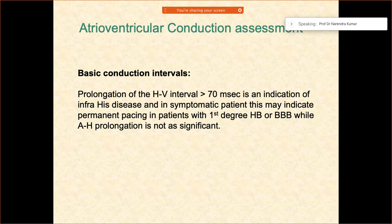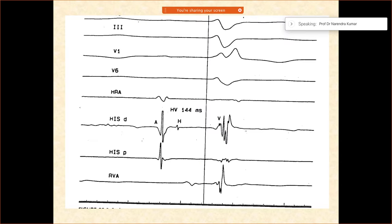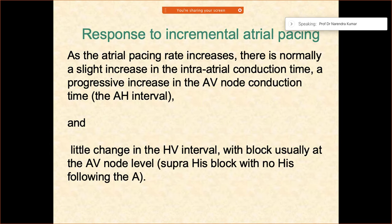If the HV interval is more than 70 milliseconds and the person is symptomatic, that is the time you should be considering pacing for such patients. Looking at the tracing here, you can measure the AH interval, and when you look at the HV interval it is 144 milliseconds — so this is an indication for pacing. More than 100 milliseconds is always a pacing indication. However, if it is more than 70 to 80 milliseconds but less than 100 milliseconds, and someone is having a degenerative muscular disease, for those patients again you should pace them.